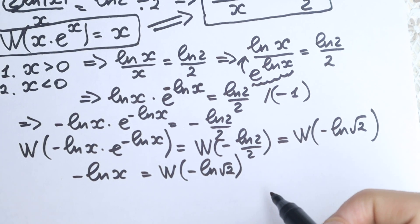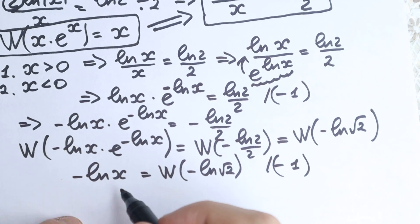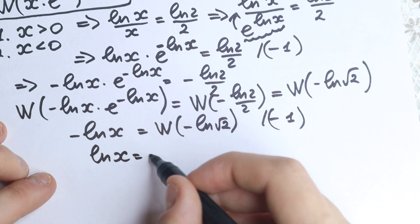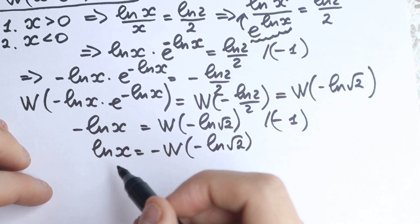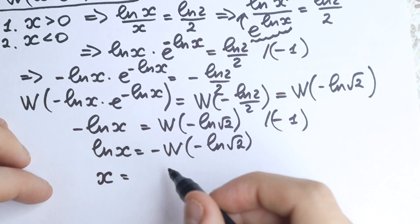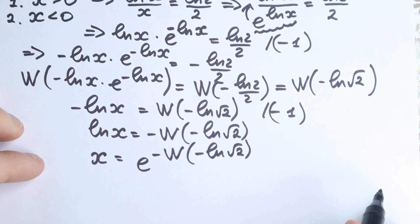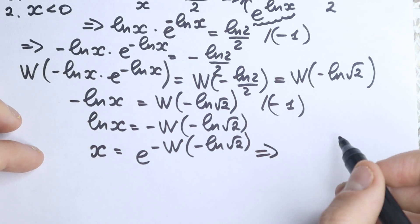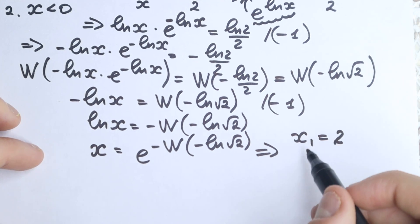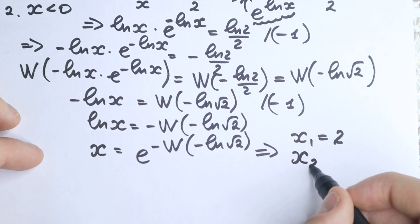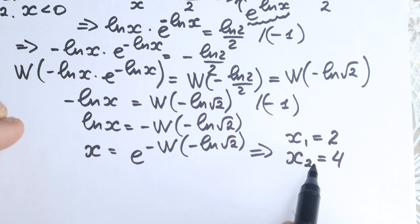Multiplying both sides by minus 1: natural log x equals minus W of minus natural log square root of 2. Taking e to the power of both sides: x equals e to the power of minus W of minus natural log square root of 2. Plugging into a scientific or graphic calculator, we find x₁ equals 2 and x₂ equals 4. So when x is positive, we have two roots.